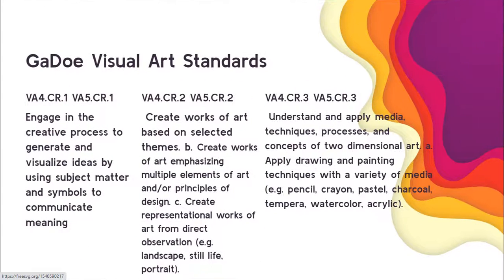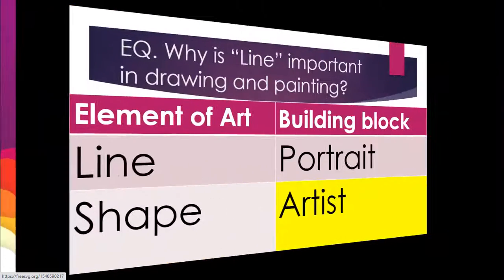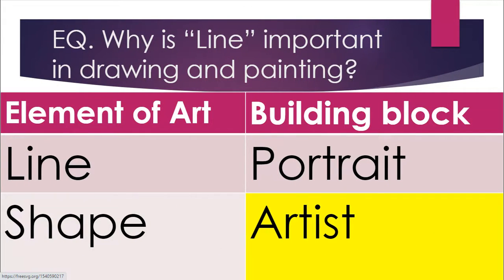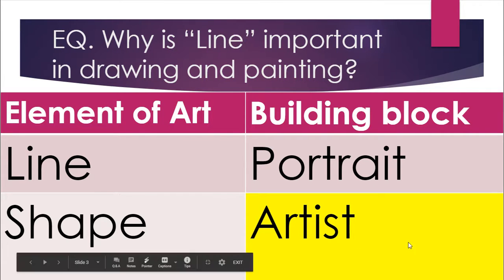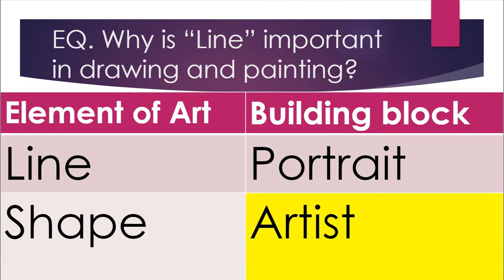Here are the standards that we're going to be using in this work of art. Our essential question is: why is line important in drawing and painting? The elements of art that we're going to pay attention to are line and shape. We're also going to be looking at what a portrait is and what an artist is.